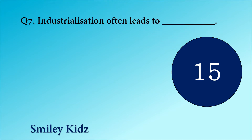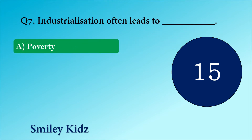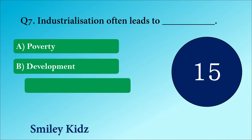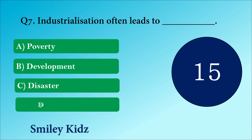Question number 7. Industrialization often leads to Dash. The options are A. Poverty, B. Development, C. Disaster or D. Population.